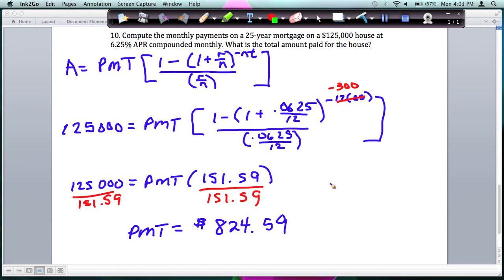It also asks what is the total amount paid for the house. So to find the total amount paid for the house, you would multiply your payment, $824.59, times the number of payments you make, and you make payments for 25 years monthly, and we said 25 monthly, that's times 300 total payments.